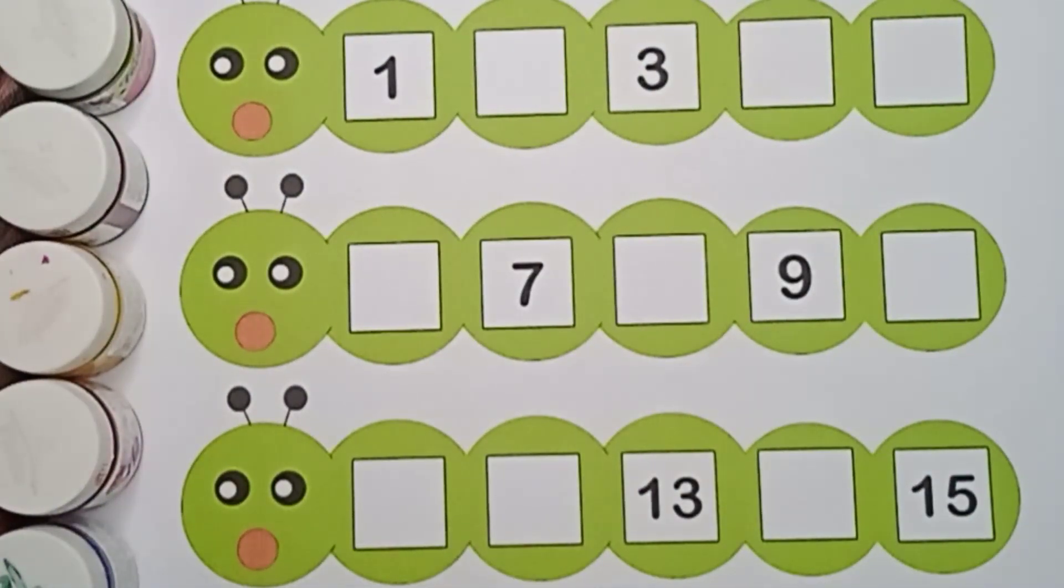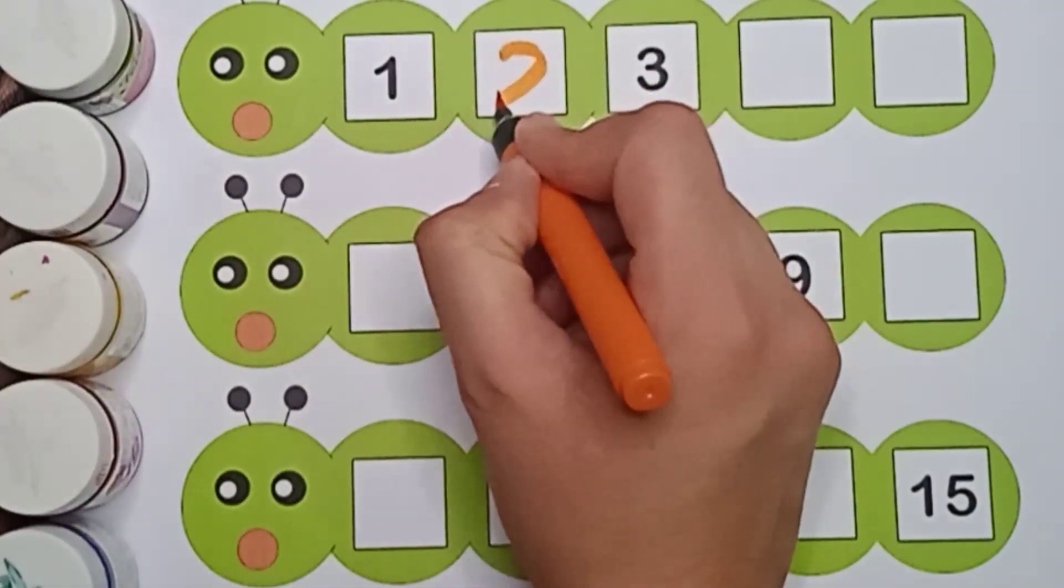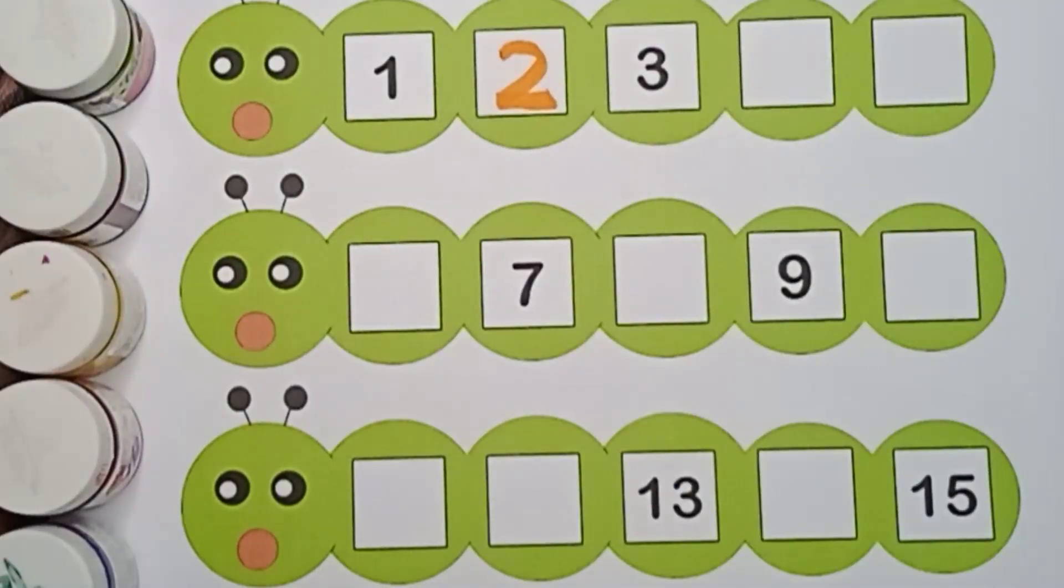Let's start writing. Orange color. 1, 2. What comes after 1? 2.